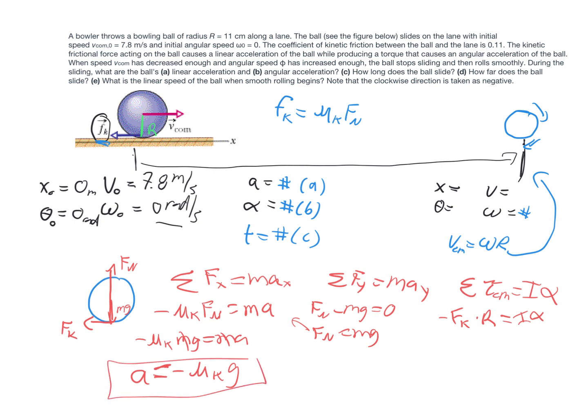Similarly for part b, we can plug in the same idea into our sum of the torques. We have negative mu k mg for our force of friction times r, the lever arm distance, equals I for a solid sphere, that's two-fifths m r squared, times alpha, and from there we can solve for alpha as well, doing some canceling out and so on, so you should be able to get a numerical value for that as well.